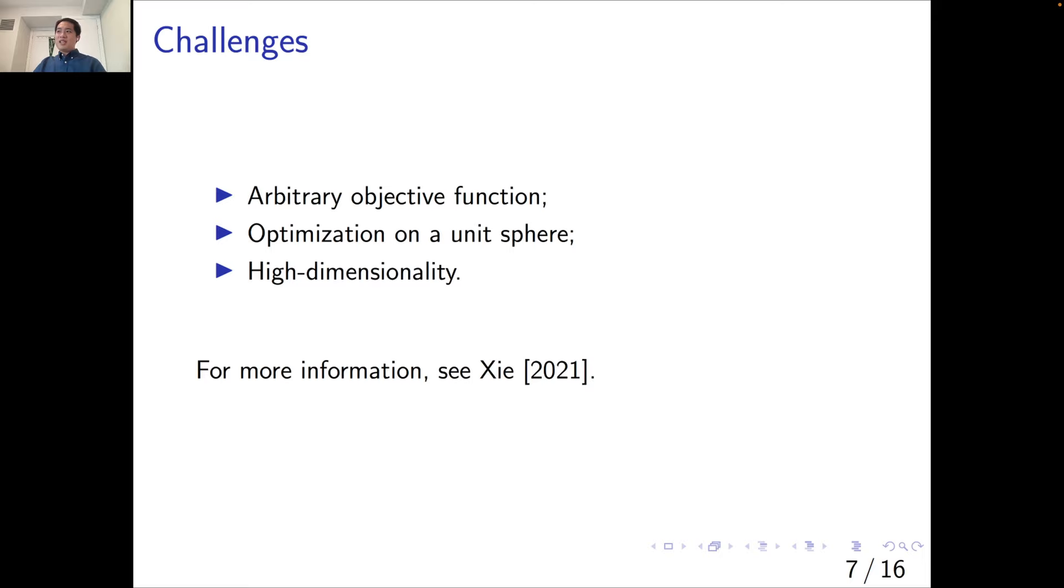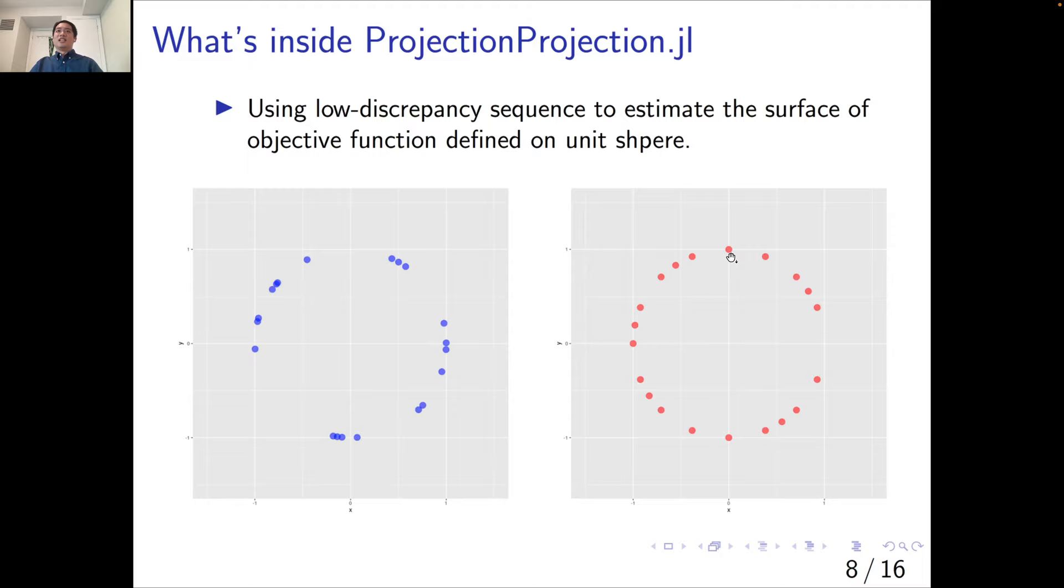In my thesis, I was focusing on tackling these problems. The TLDR is that it's a divide and conquer algorithm. But due to time limit, I'm not going to go through all the details. Let's just have a quick overview of the two most essential components inside the projection pursuit package, which helps us to solve the problem. The first one is to generate a low discrepancy sequence on a unit sphere to help us roughly estimate the surface of the objective function.